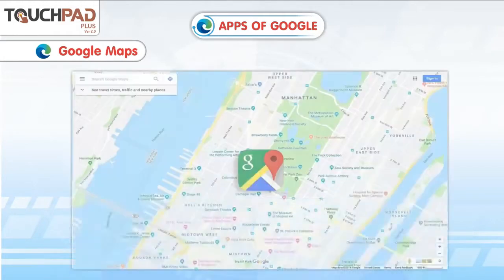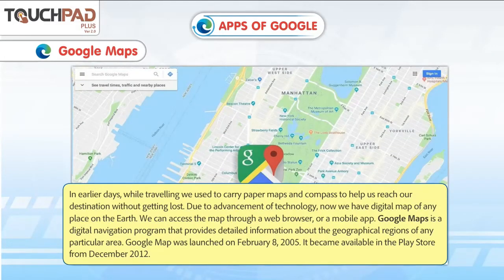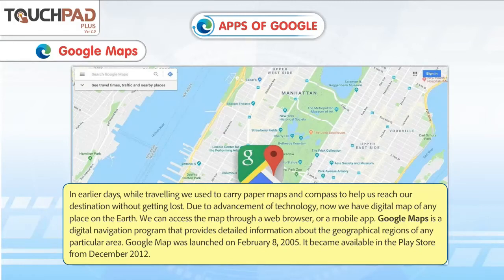Google Maps. In earlier days, while traveling, we used to carry paper maps and a compass to help us reach our destination without getting lost. Due to advancement of technology, now we have a digital map of any place on earth. We can access the map through a web browser or a mobile app. Google Maps is a digital navigation program that provides detailed information about the geographical regions of any particular area. Google Maps was launched on February 8, 2005, and became available in the Play Store from December 2012.